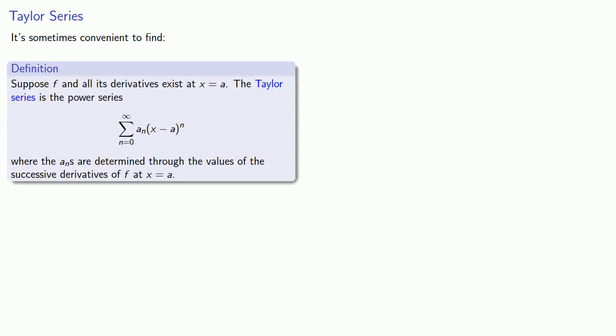Suppose f and all its derivatives exist at x equal to a. The Taylor series is the power series, sum from n equals 0 to infinity, aₙ times (x minus a) raised to power n, where the coefficients aₙ are determined through the values of the successive derivatives of f at x equals a.